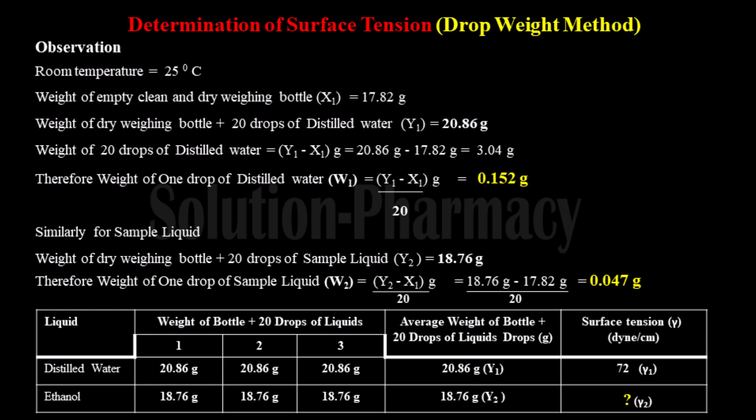The second column is the weight of the bottle with 20 drops of liquid recorded during the experiment, with three readings — first, second, and third — meaning the experiment is repeated three times for each liquid. Here we have taken the same reading in each column because this is just for demonstration purposes; we performed the process only one time.